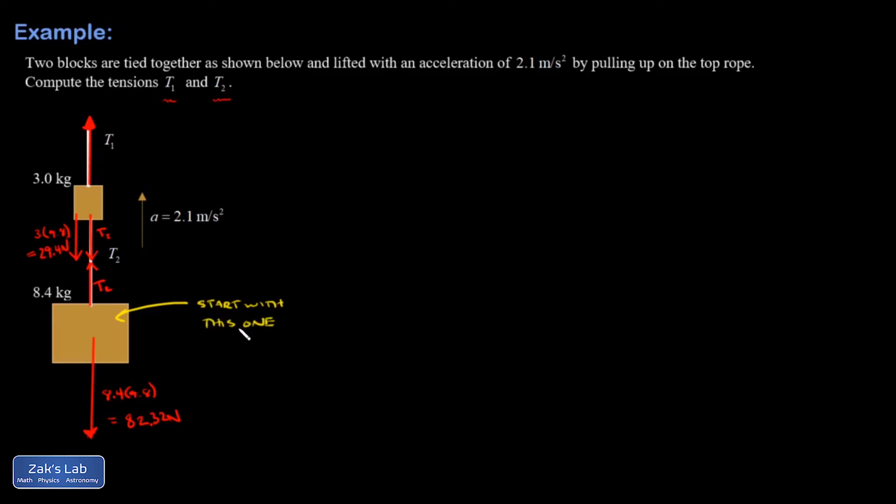I look at the force analysis on this and I'm assuming that plus is going to be the upward direction. I have T2 as a positive force, 82.32 newtons pointing down that's going to count as negative, and that's my net force. So I'm going to write down Newton's second law, this is the 8.4 kilogram mass. I write f net equals ma.